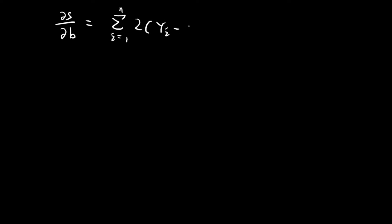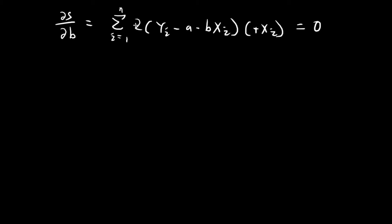We differentiate S with respect to B. The process is similar to what we just did: we get 2 times (yi minus A minus B times xi), and since we're using the chain rule, we also differentiate the inside term — this time with respect to B — giving us negative xi. We set this equal to 0, and then divide both sides by negative 1 and 2.